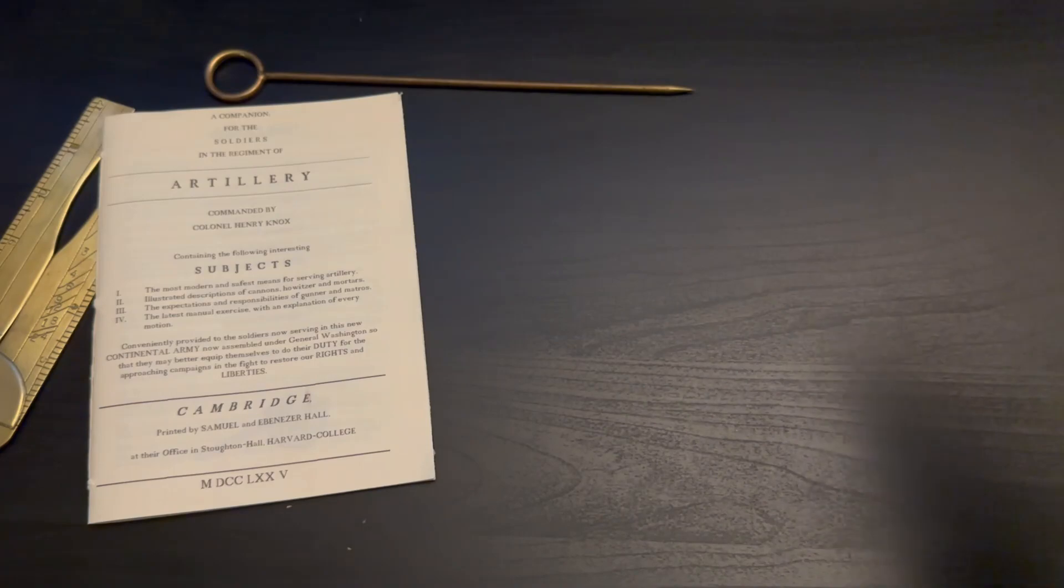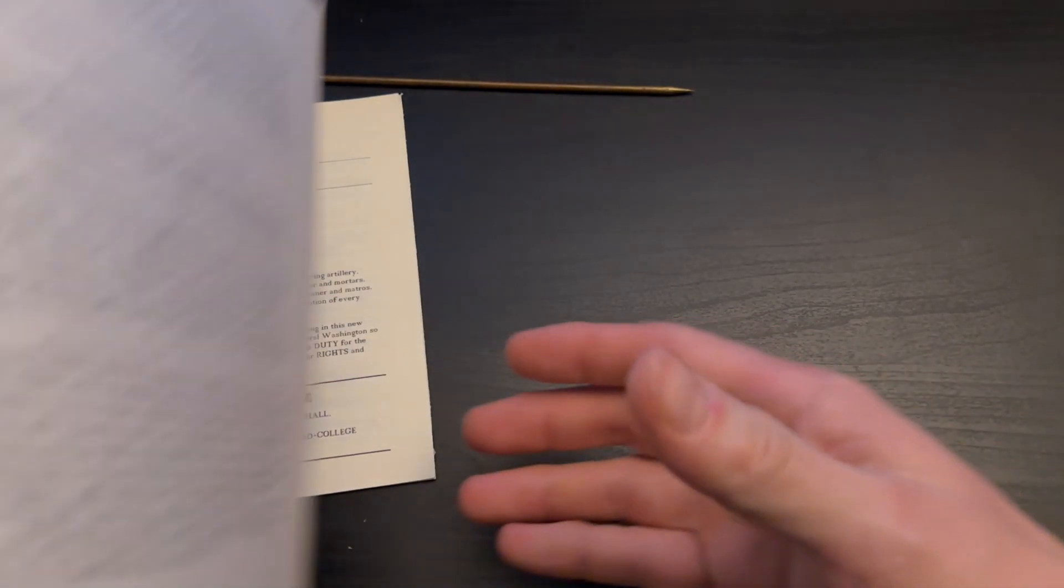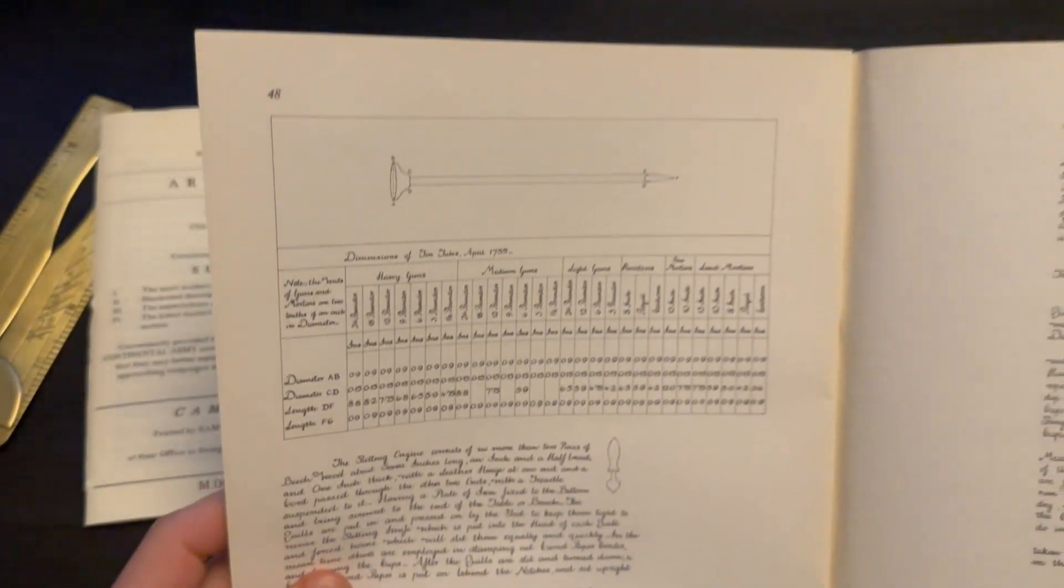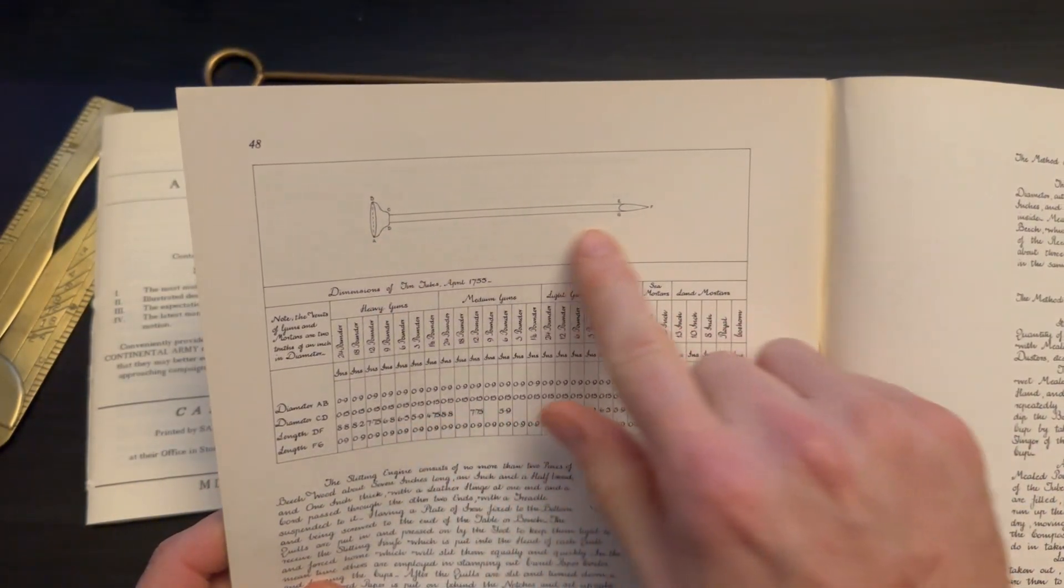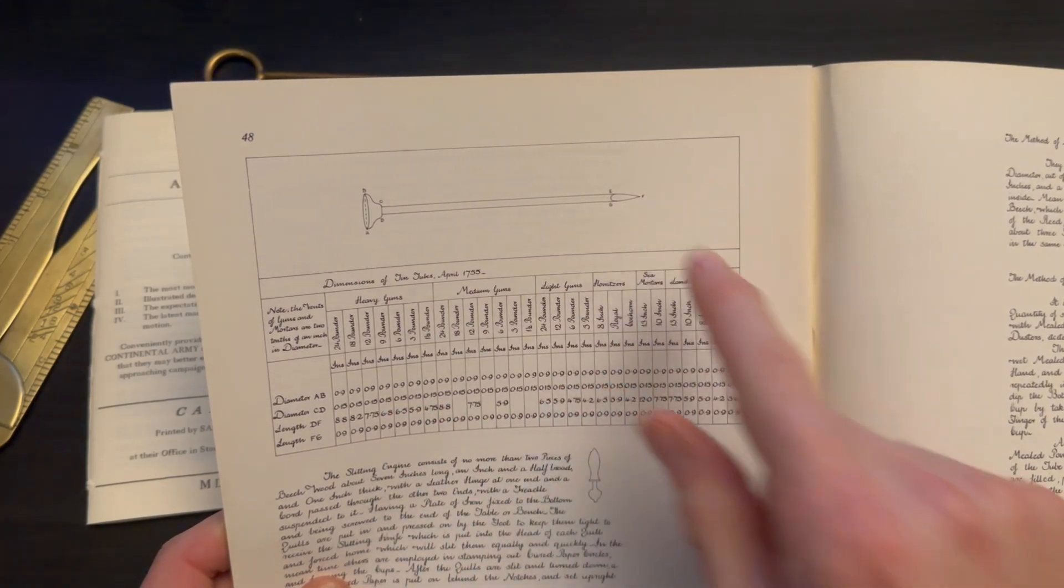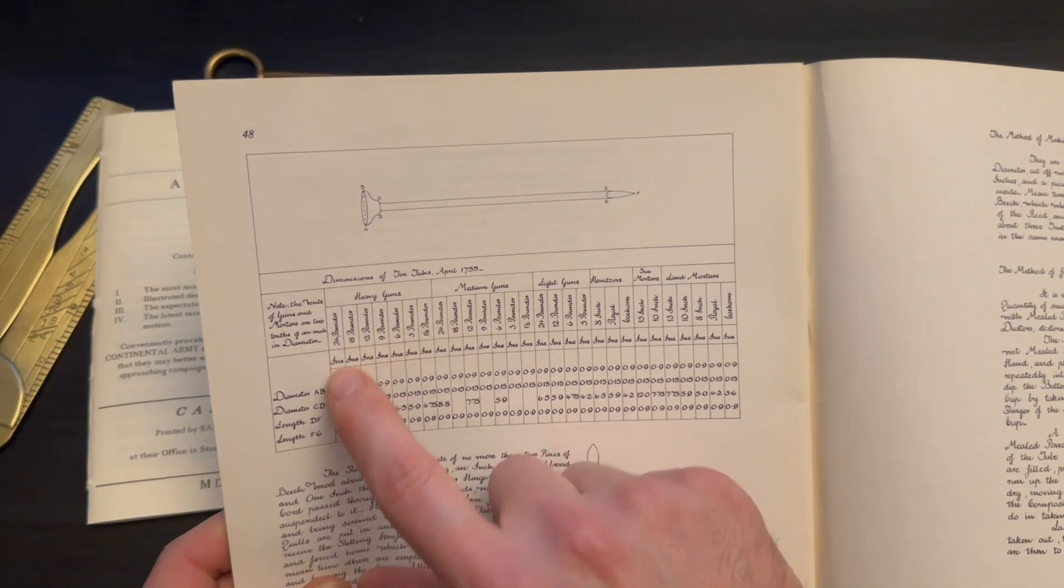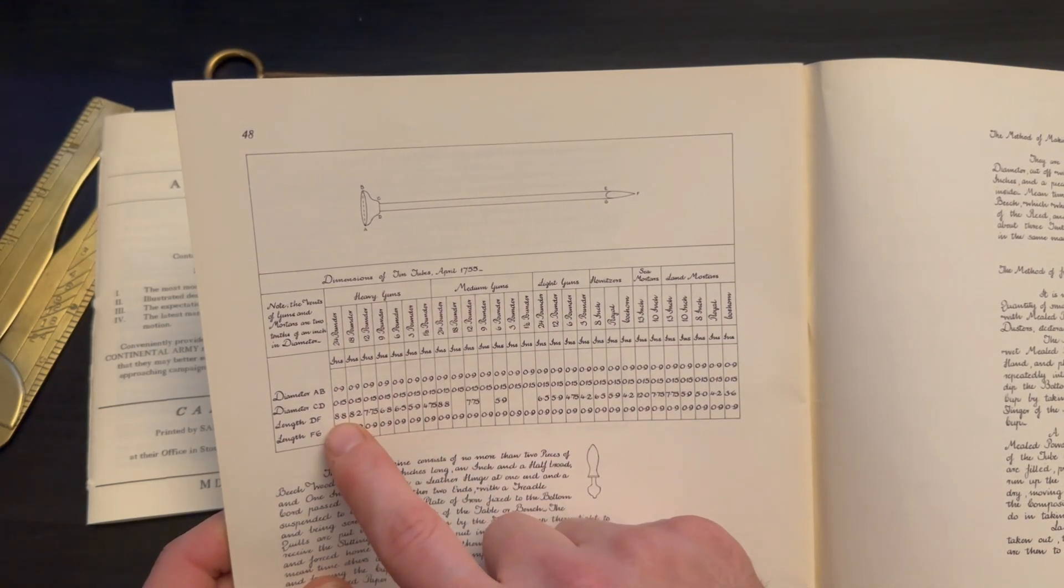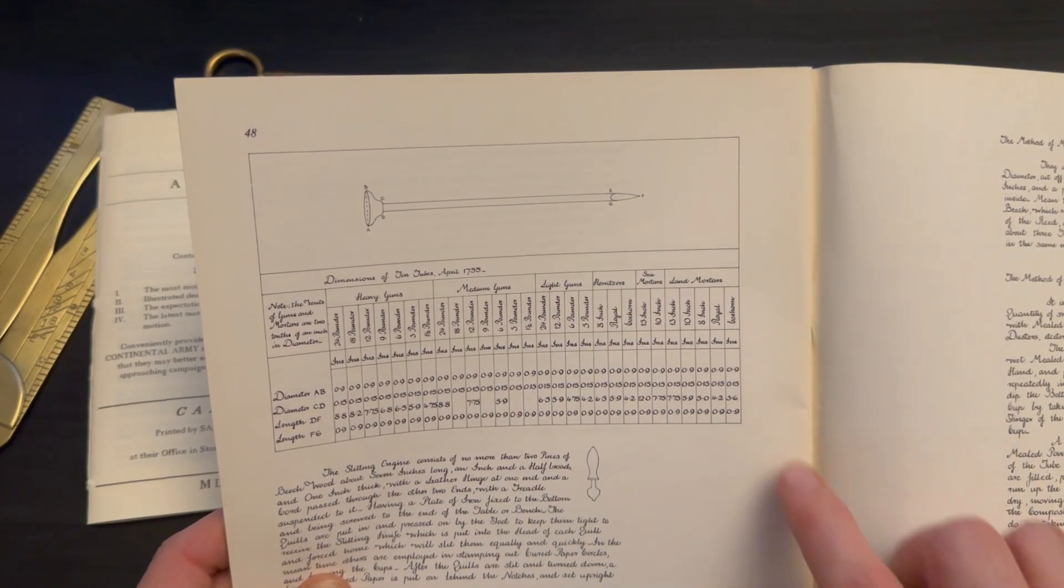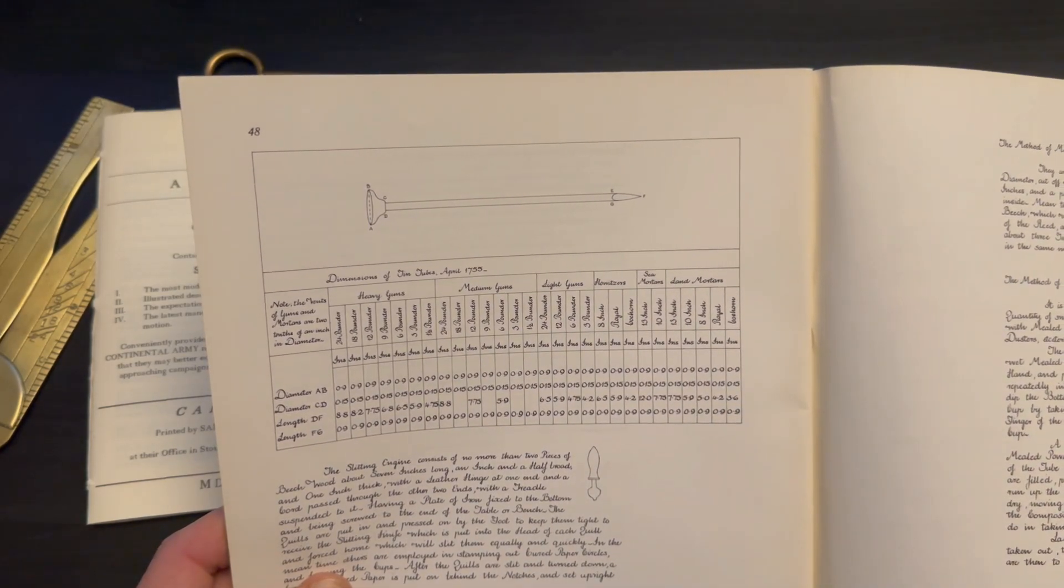To look at an illustration of this description, we'll turn to page 48 of Adrian Kruana's British Artillery Ammunition, 1780, where there's a lovely diagram of a tube and a table below, which indicates the various lengths of tube that you would need for different types of artillery. For example, the longest here for a 24-pounder would require a tube that was 8.8 inches in length, all the way down to a cohorn mortar, which would only need 3.6 inches.